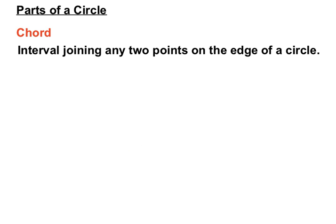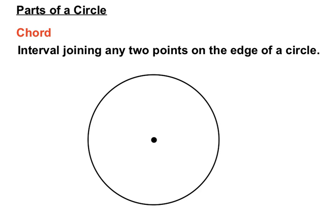A chord is an interval joining any two points on the edge of a circle. It doesn't have to pass through the centre, just any two points on the edge. It passes through this point on the edge of the circle and this point on the edge of the circle. So let's call it a chord.